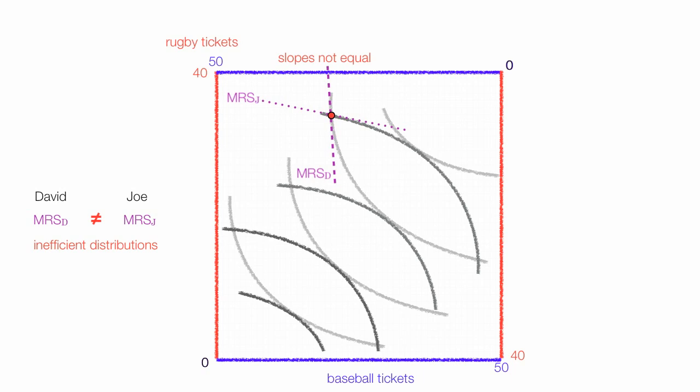This is just an introduction to the Edgeworth box diagram. I showed you the efficient distribution, the contract curve, and also talked about how those points are chosen. The Edgeworth box diagram is nothing more than two indifference maps plotted on top of each other, which we can see here.